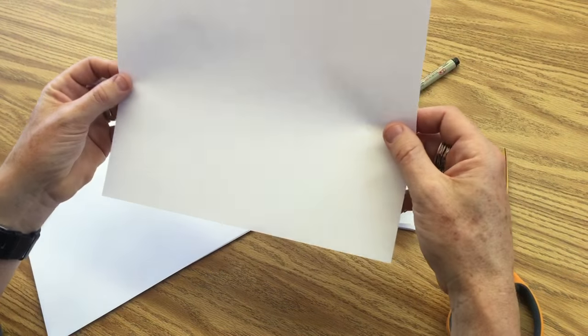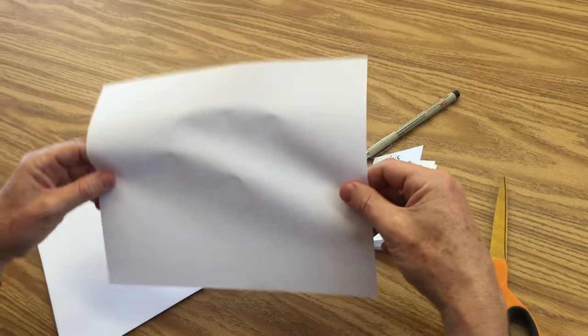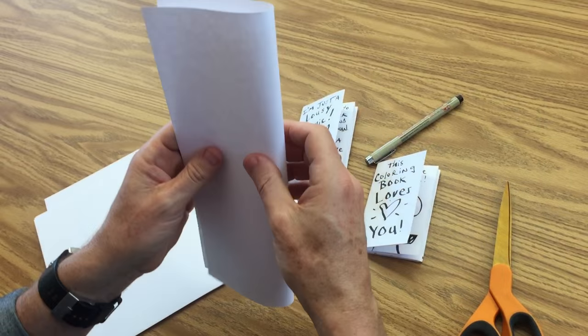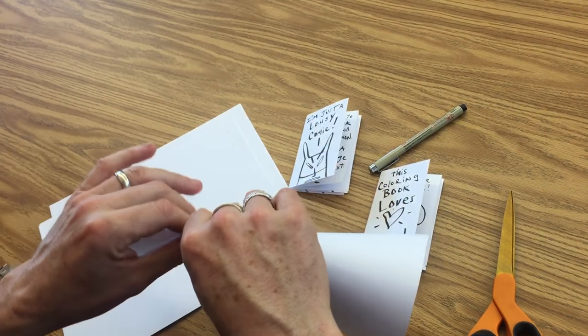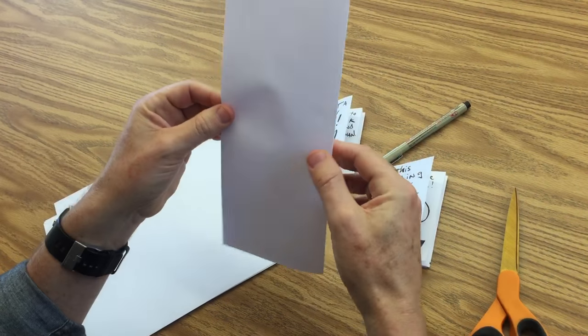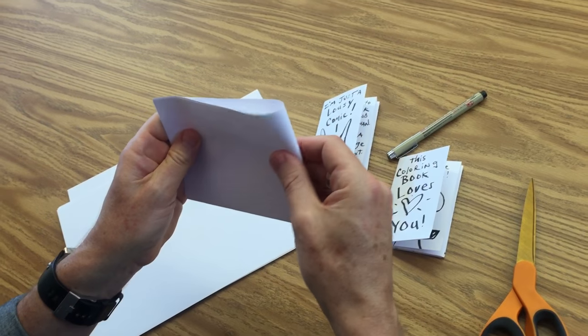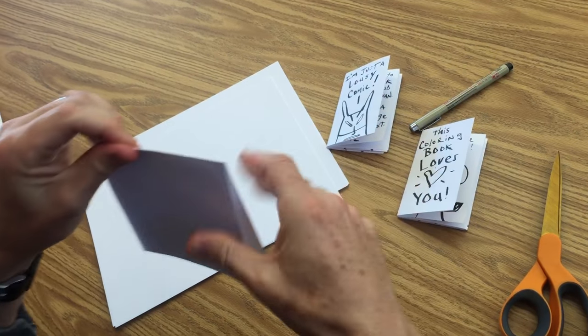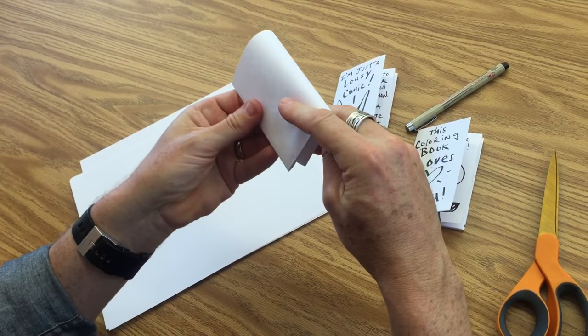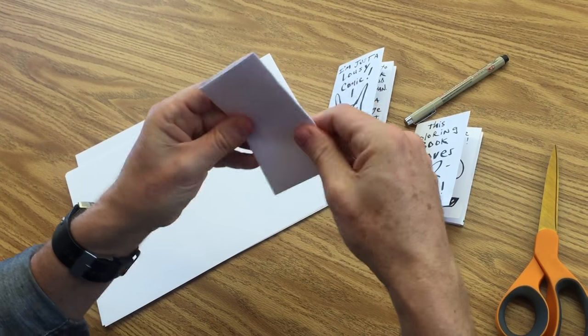So what we're going to do is take our standard sheet of paper, eight and a half by 11. We're going to fold it in half lengthwise, so long and narrow. Then we're going to fold that precisely in half, just like so, and then just fold that in half again.